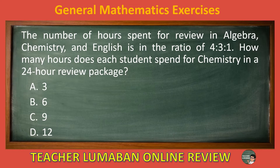The correct answer is letter C: 9. The number of hours spent for review in algebra, chemistry, and English is in the ratio of 4:3:1. The student spends 9 hours for chemistry in a 24-hour review package.